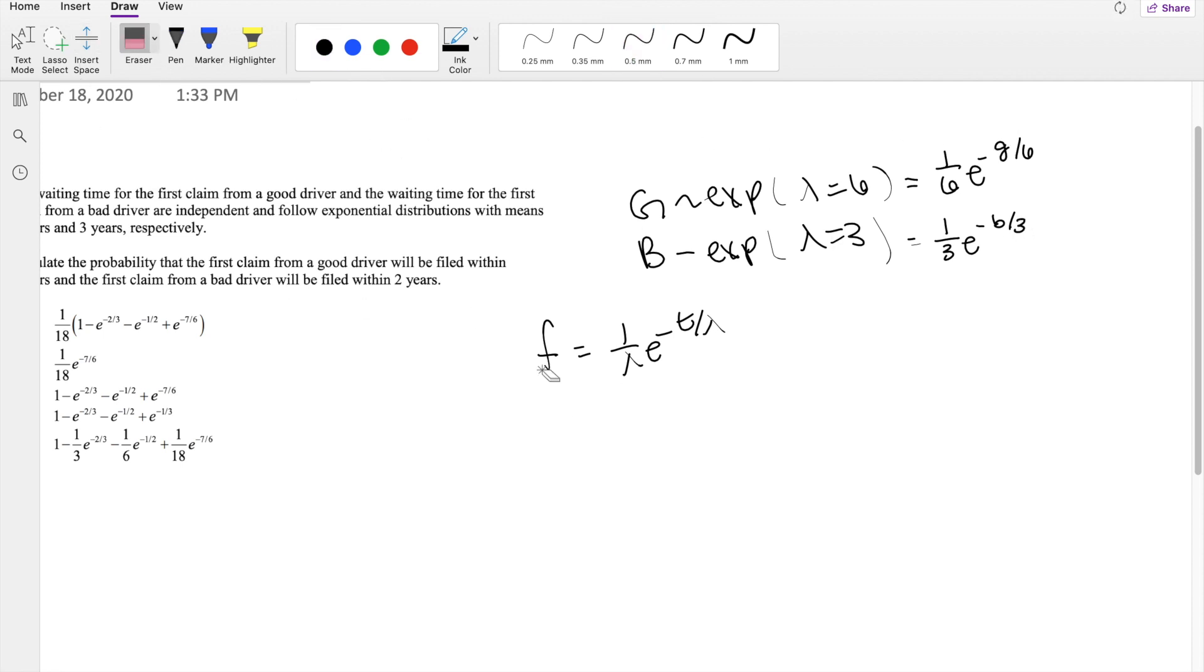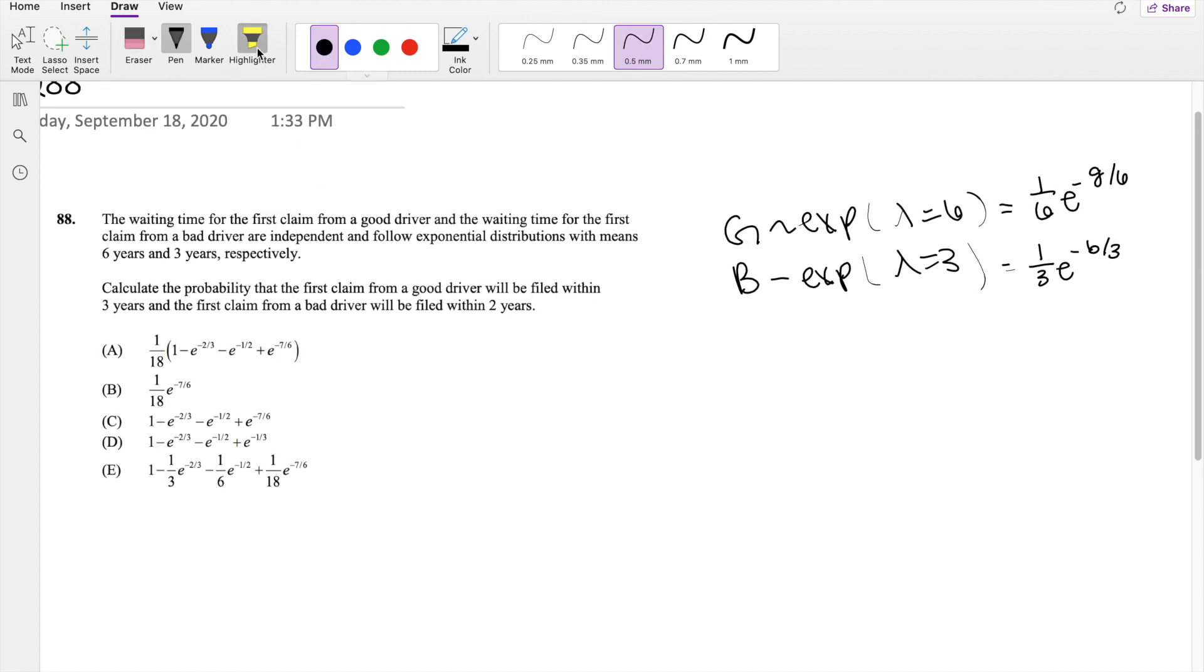And then we know that these are independent. So for independent functions, the f of g comma b will just be equal to f of g times f of b. So in our case, it's going to be 1 over 18, e to the negative g over 6 times e to the negative b over 3.